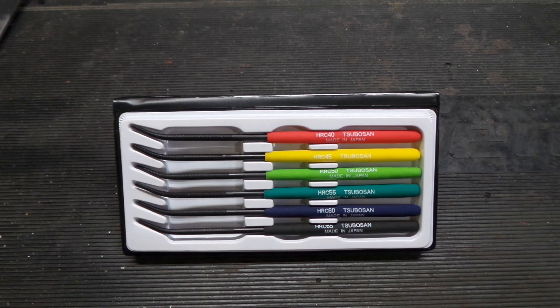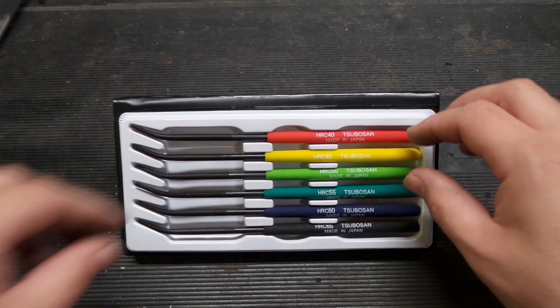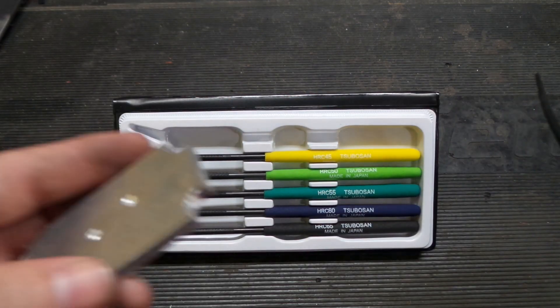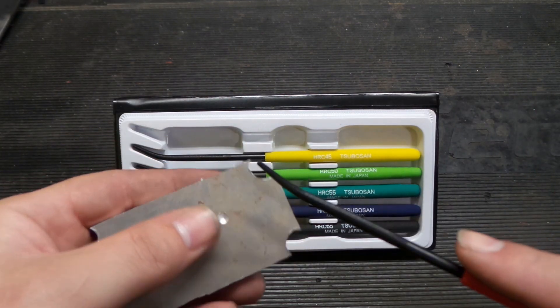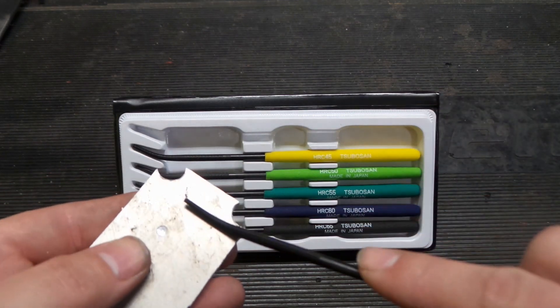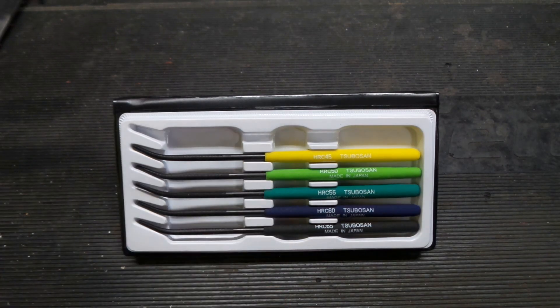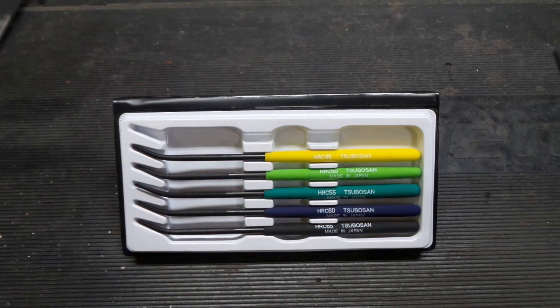So anyway let's take a look at these. We got a random piece of aluminum here and we got the lightest one. We should easily be able to scratch across that, you can see that there we did. That's not overly surprising.